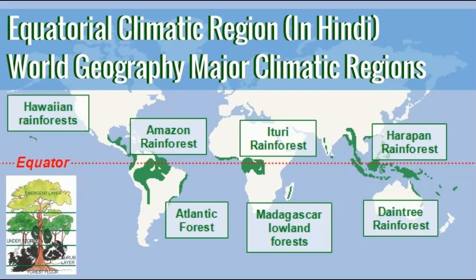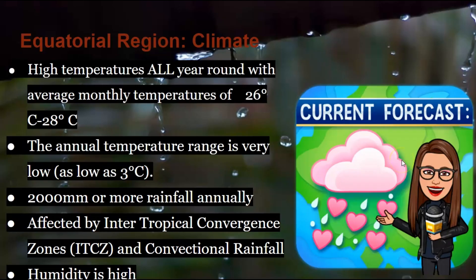This map shows us the places that are in green — here and here. These are places that are considered to be part of the equatorial region or experience the equatorial climate. All of these places in green are 0 to 10 degrees north or south of the equator.